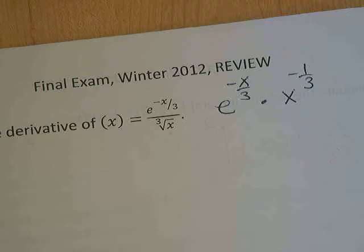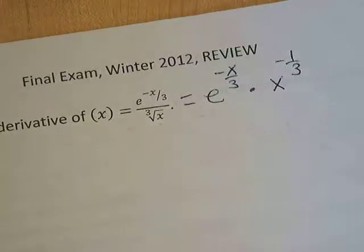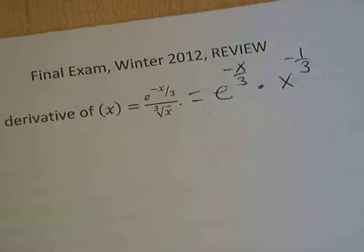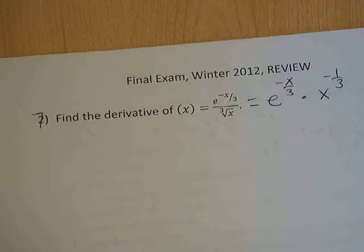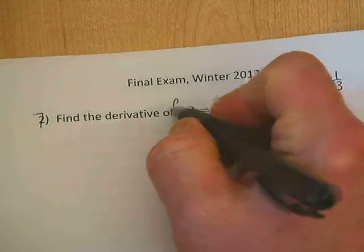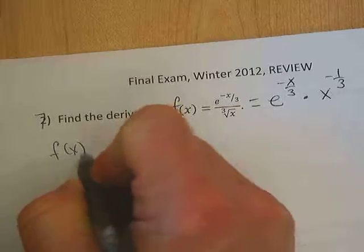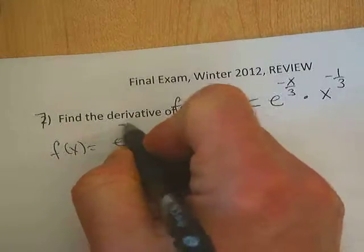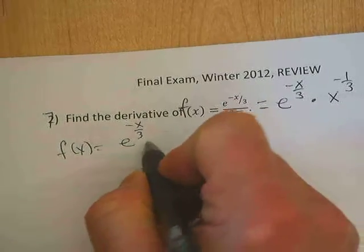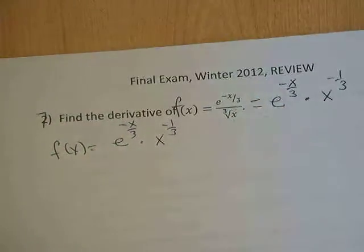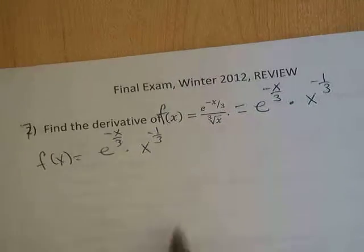First of all, did I write that correctly as a product? I believe I did. So, let's proceed with that. I forgot an f in there, interesting. So f of x equals e to the negative x over 3 times x to the negative 1 third. Alright, product rule.